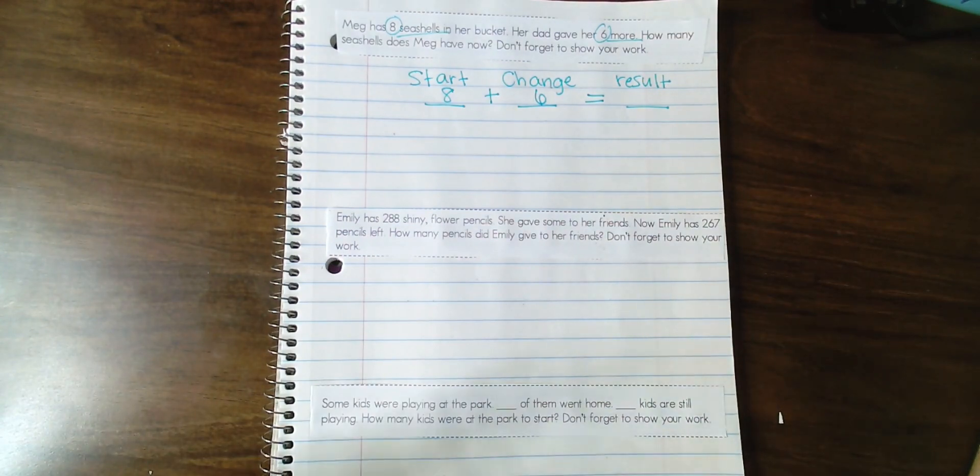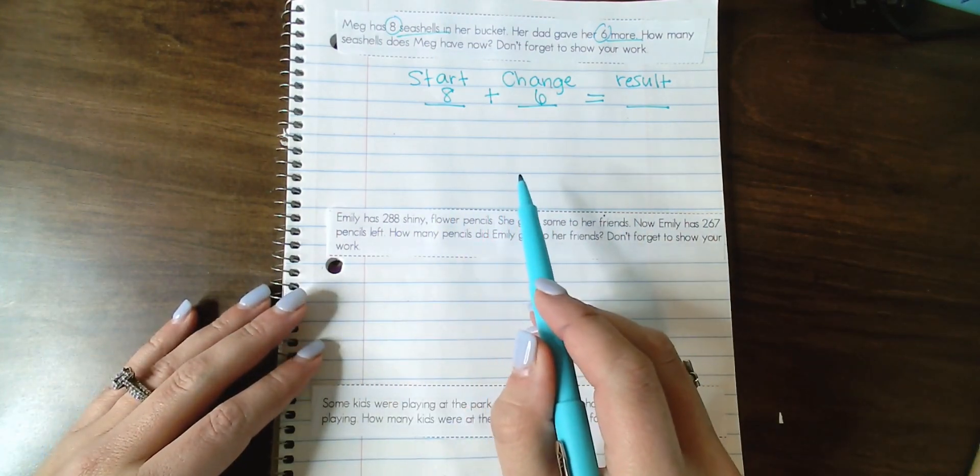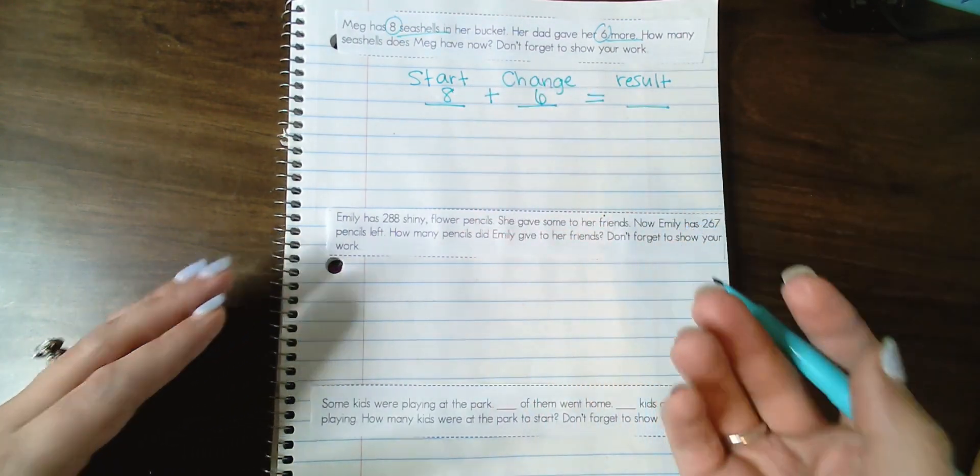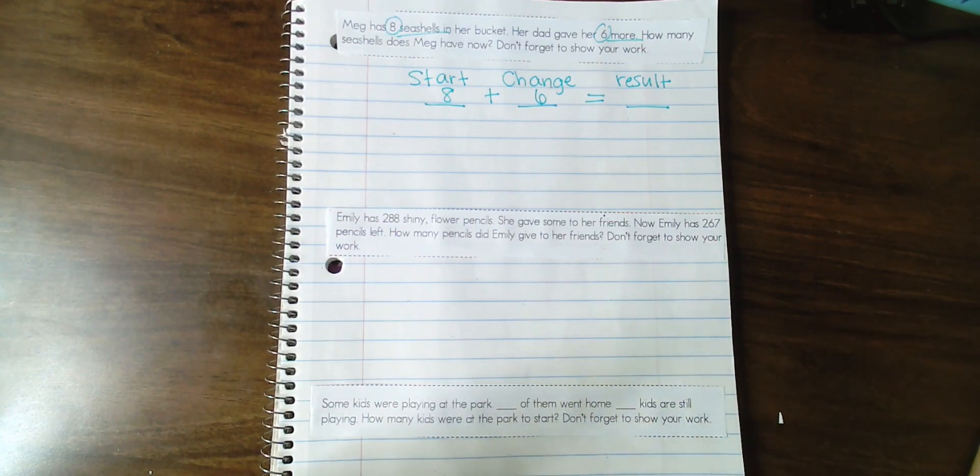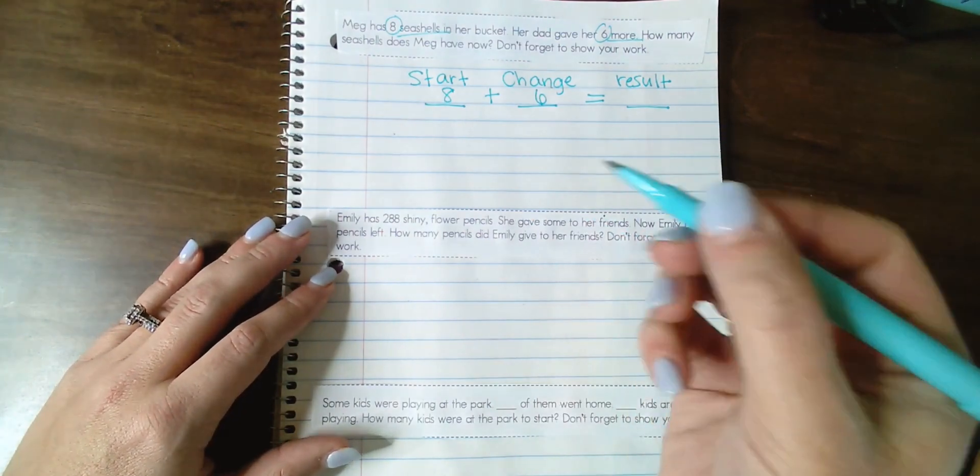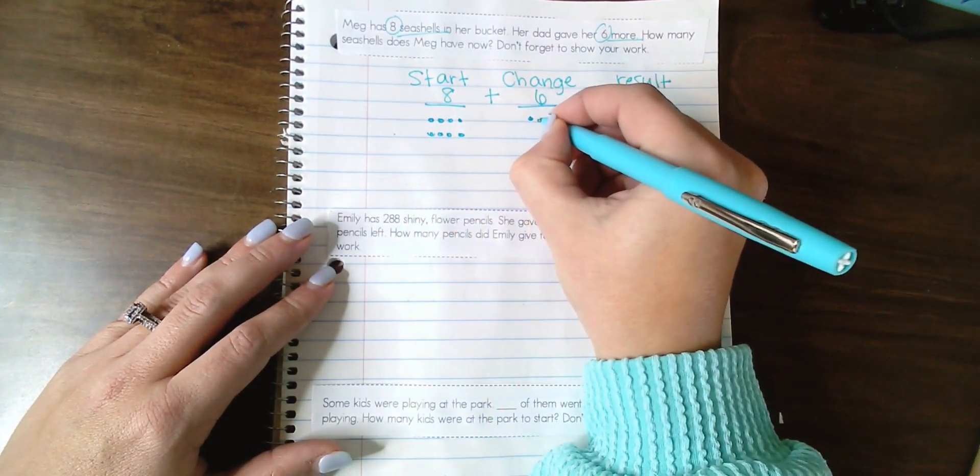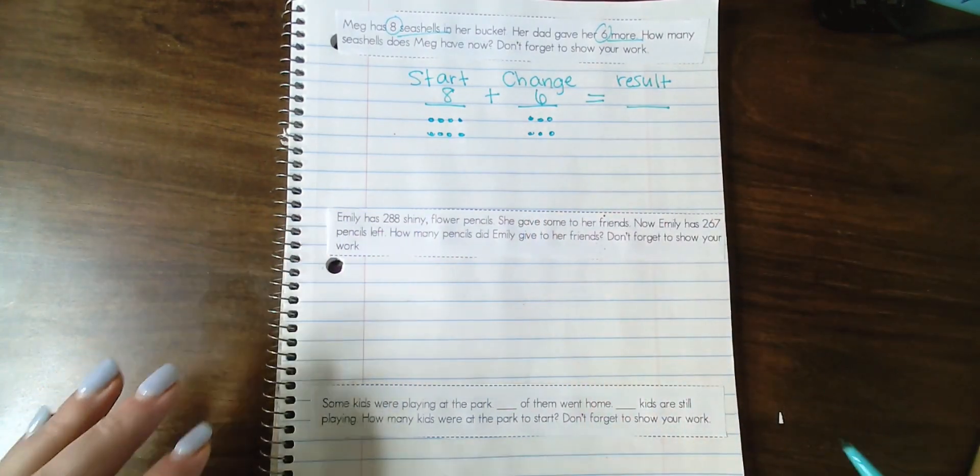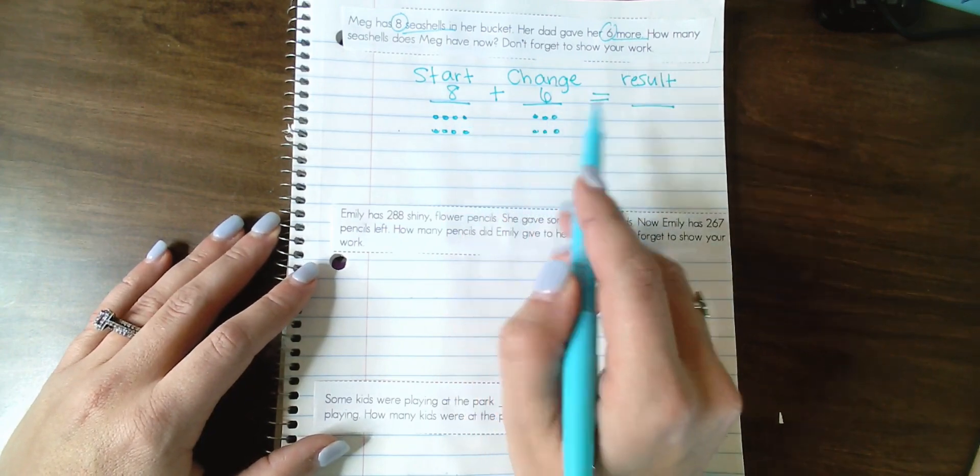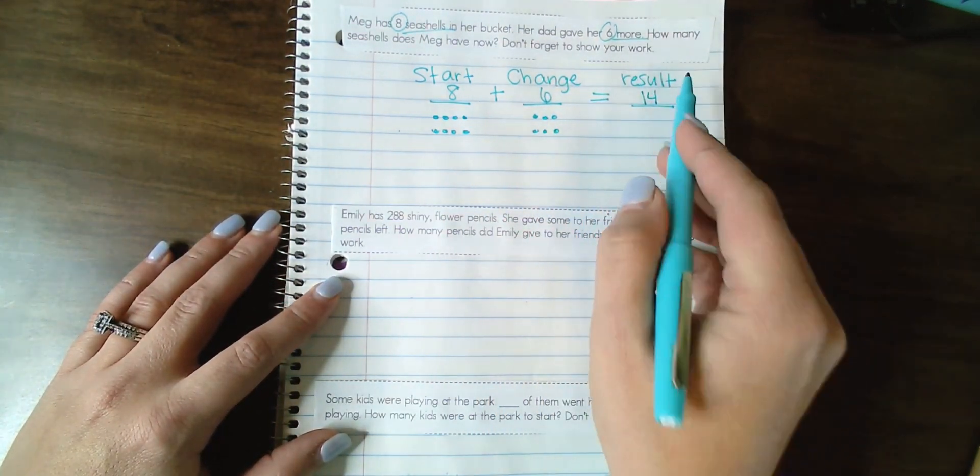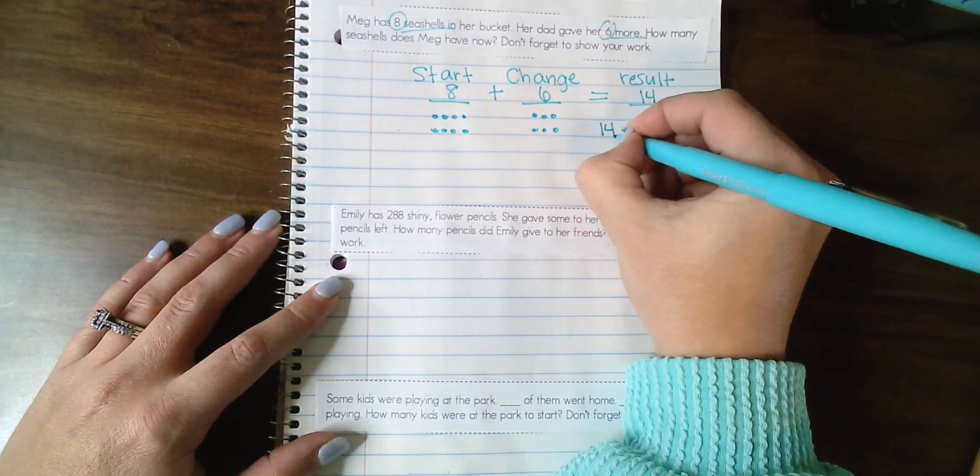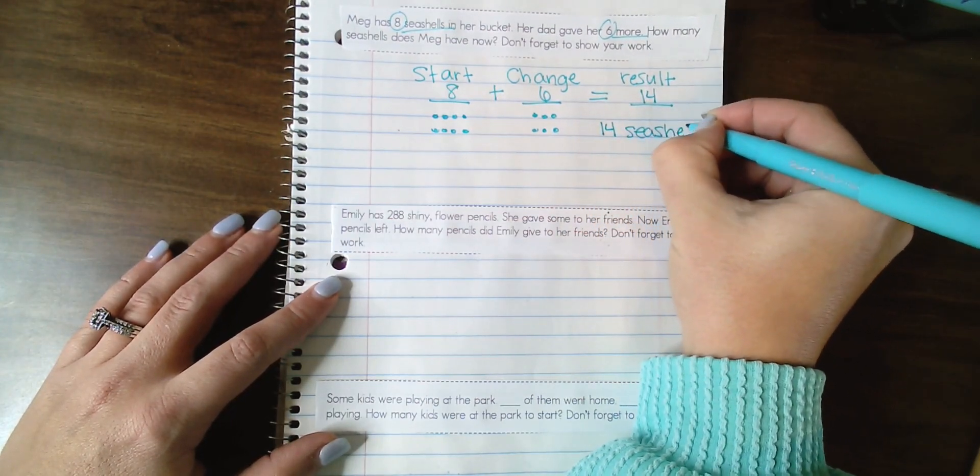Now we know what operation needs to happen and what we need to do in order to solve. If your kids needed to use a number line, if they needed to draw pictures, maybe they need to use manipulatives to help them solve, they absolutely can. So let's say in this example, we're working with first grade students or beginning of the year second grade students, they might not know eight plus six automatically in their head. So maybe they want to draw out a picture to match. You're wanting them to show their work. We know that she starts out with eight. Her dad gives her six more. Eight plus six is 14. So our result is 14. Meg ends up with 14 seashells in her bucket. Let's move on to a more challenging problem.